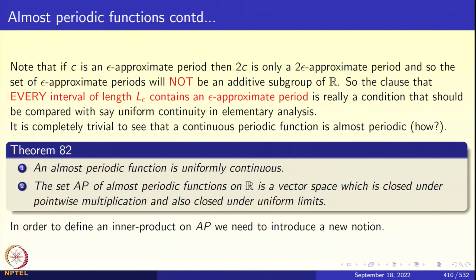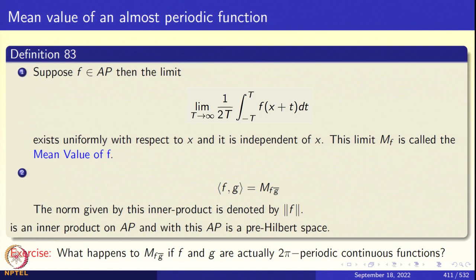Also, if you take a sequence of almost periodic functions converging uniformly, the limit function will also be almost periodic. So this algebra of almost periodic functions is closed under uniform limits — it is a very pleasant space to work with. Now we want to make the almost periodic functions into an inner product space, and in order to do that we need to bring in the notion of the mean value of an almost periodic function.